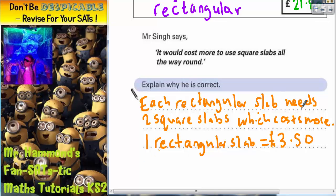So one rectangular slab equals £3.50. But all we need to do now is work out the cost of two square slabs and show that it's more. So two square slabs equals...